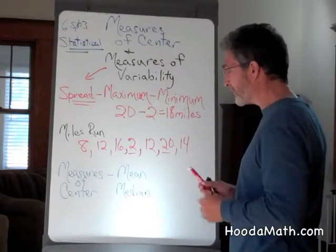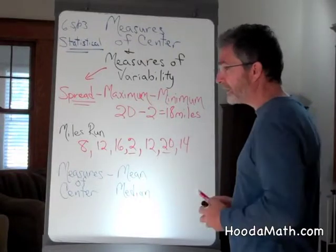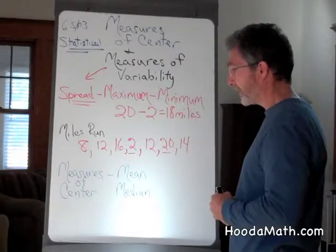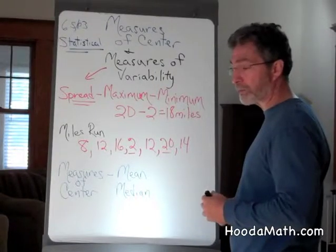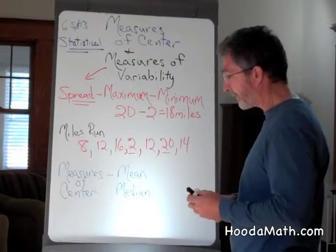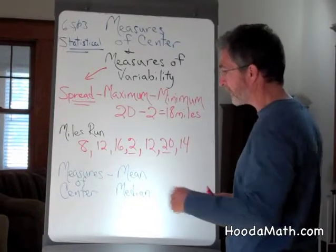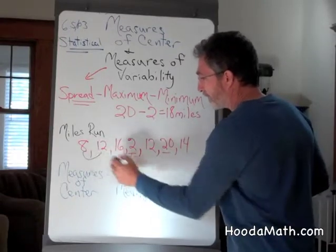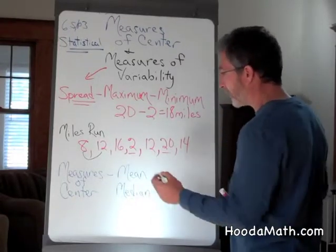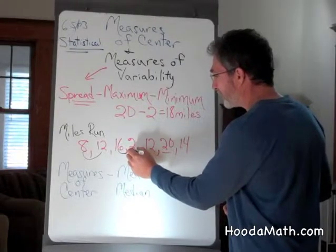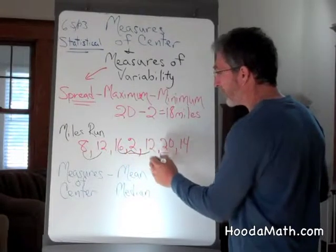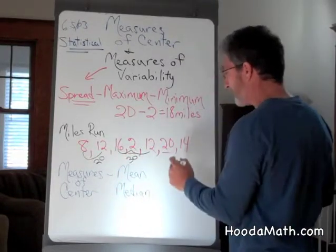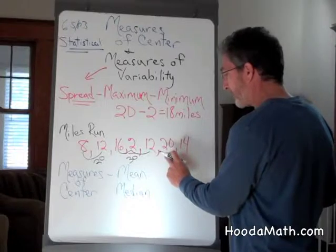Now, for measures of center, the mean is what we get when we add all the numbers together and then divide by how many numbers, to find out her average running distance. What I like to do is group numbers so they're easy to add. 8 and 12 add up to 20. 16 and 2 is 18. 18 and 12 is 30. So add 20 and 30, and I add 20 more, which gives me 70.